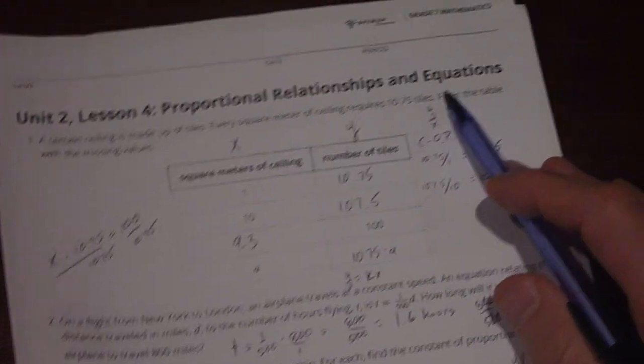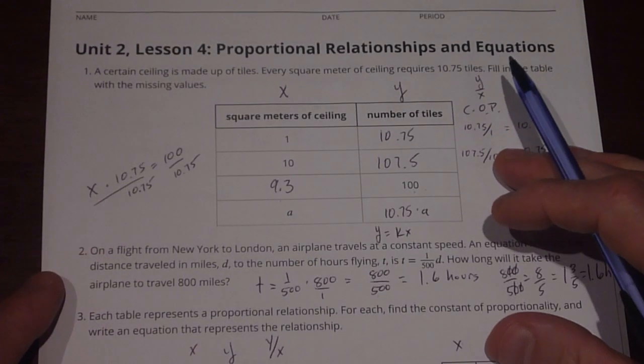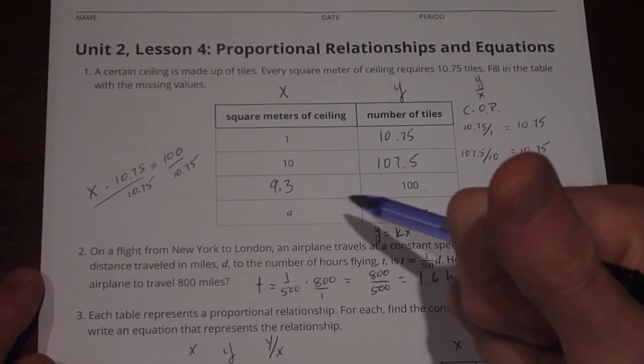Again, this was Unit 2, Lesson 4, Proportional Relationships and Equations for Grade 7 Mathematics and Open Up Resources. Hope this was helpful. Keep learning. Keep making mistakes.